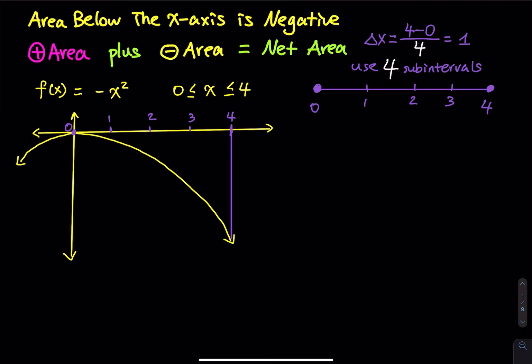Area below the x-axis is negative, so that means when you have a region below the x-axis, that area is negative. Back in geometry, area must be positive — area can be zero, which means there is nothing. Area can be positive, but in this type of problem when you study the area under the curve, when the region is below the x-axis the area is negative.